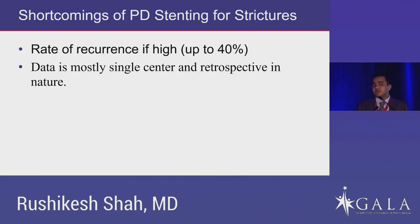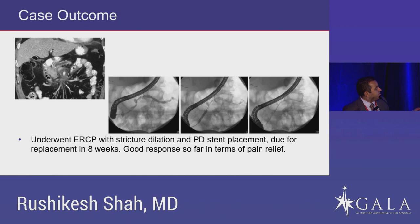What happened with our patient? He had a dilated duct and a stricture in the head. We offered ERCP, dilated the stricture, and placed a 7 French by 12-centimeter stent. This patient had a great response in terms of pain control and is due for another ERCP in four weeks, doing well so far.